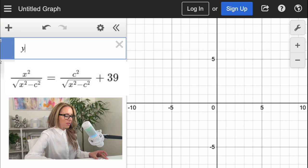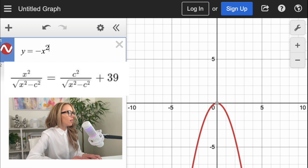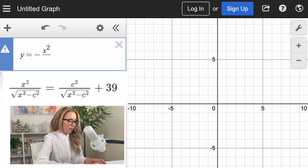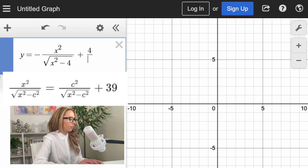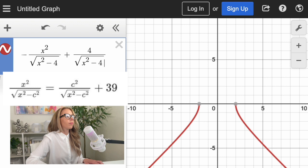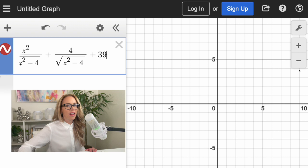So I'm in Desmos and I'm setting it equal to Y, moving that other term to the other side like I mentioned. As you can see, I have it entered. Now I'm going to zoom out.